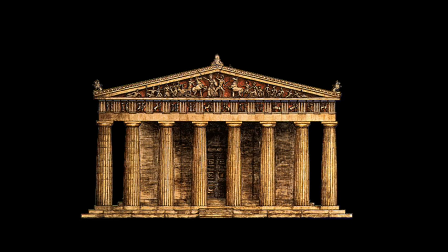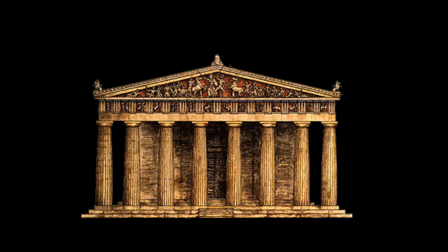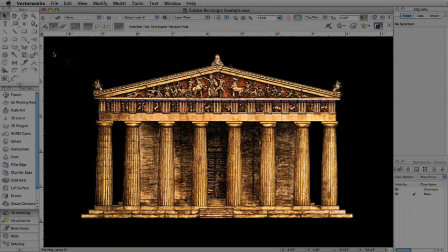The golden rectangle has been known since antiquity for its pleasing proportions. It is frequently found in architecture as well as art, a shape that just seems correct to the eye.